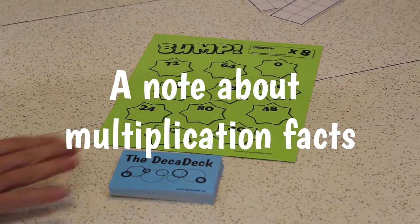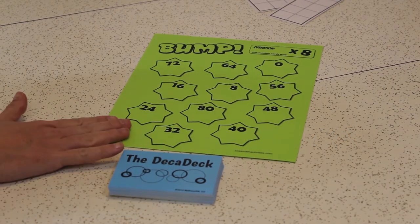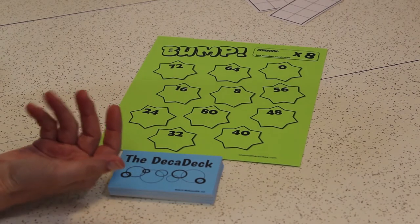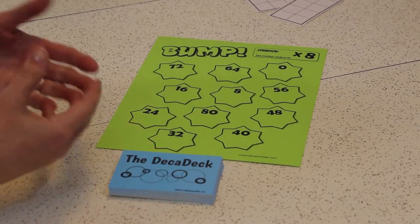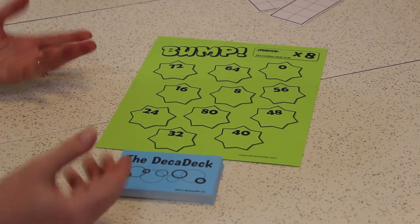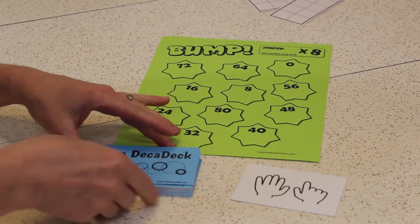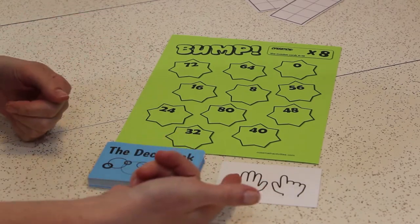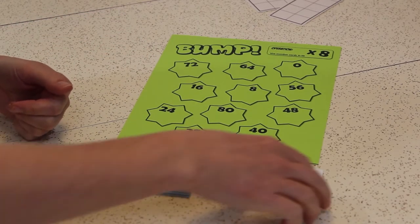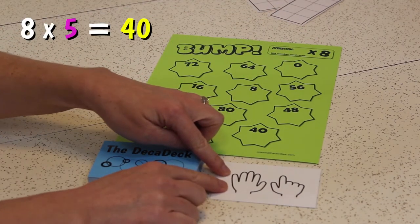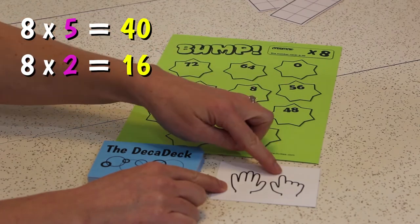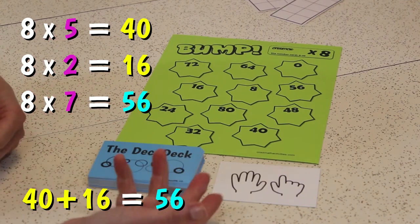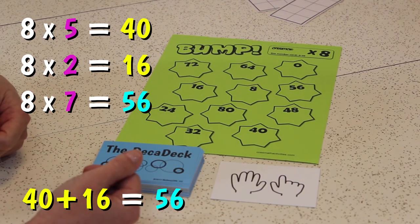One thing I want to add when you're using the Decadec to do multiplication, especially with bigger numbers, is one thing that you can encourage your students to do is for those larger abstract facts, help them break the facts up into smaller facts. For instance, 7 times 8, nobody likes that because it's abstract. And so what you can encourage your kids to do, if they get 7 times 8, if they don't have it memorized, that's okay. Help them understand. They can put it together with the pieces on the Decadec. So for instance, you might say, well, do you know 8 times 5? Well, yes, I know 8 times 5 is 40. Great. Do you know 8 times 2? I do. I know 8 times 2 is 16. 40 plus 16 is 56. That's the kind of thing that we want students to practice to help make sense of those harder to remember facts.